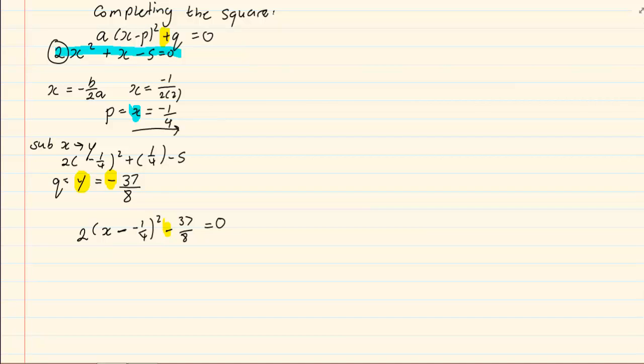Now we solve for x using our square root. I am going to have 2 into x plus a quarter because a negative and a negative will equal to a positive. All squared is equal to 37 over 8. Then I am going to divide by 2, giving me x plus a quarter all squared is equal to 37 over 16.